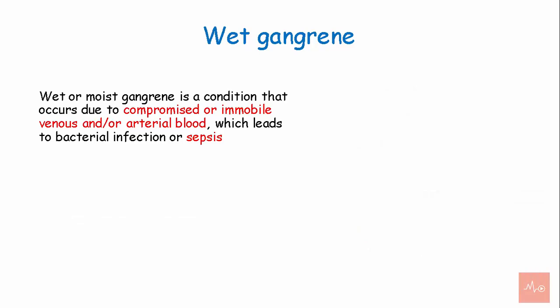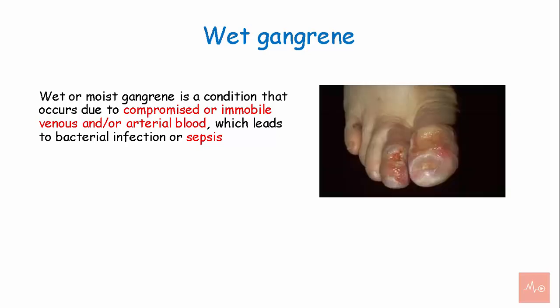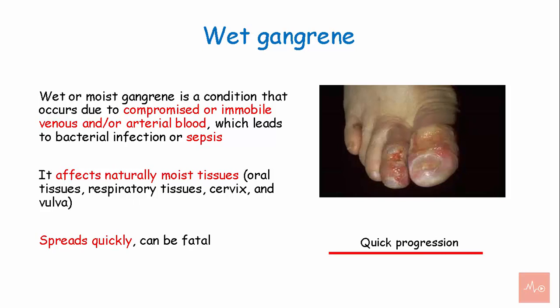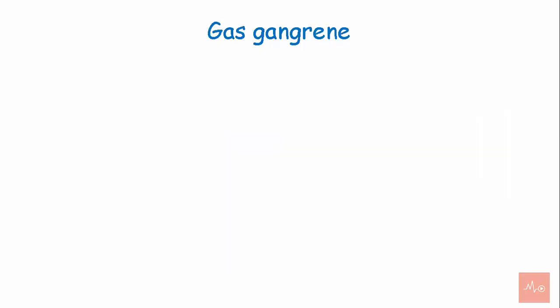Wet or moist gangrene is a condition that occurs due to compromised arterial or venous blood supply, which leads to bacterial infection or sepsis. It affects naturally moist tissues — mostly oral tissues, respiratory tissues, cervix, and vulva. It spreads quickly and it can be fatal.